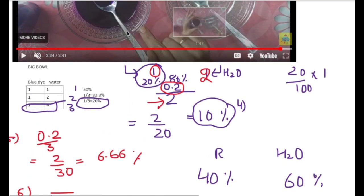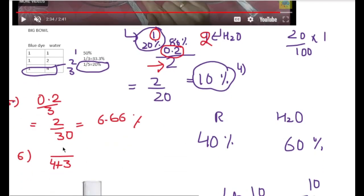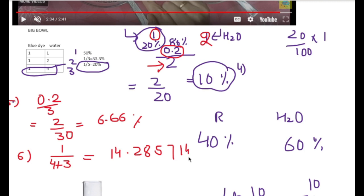All the dye we have is in this bowl only. From the start of the video, we did not throw dye anywhere, so all the dye is here. How much dye did we add? It was 1 spoon. So you can say that out of 7, only 1 spoon is the dye, and when you work it out, the answer is 14.285714...%, where that portion is recurring. This is the percentage of dye in the sixth solution.